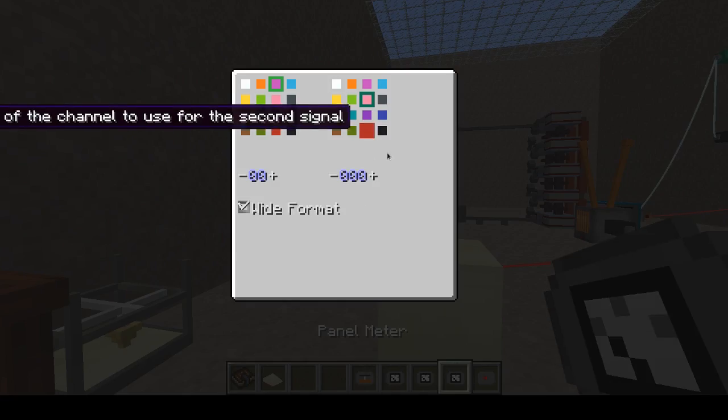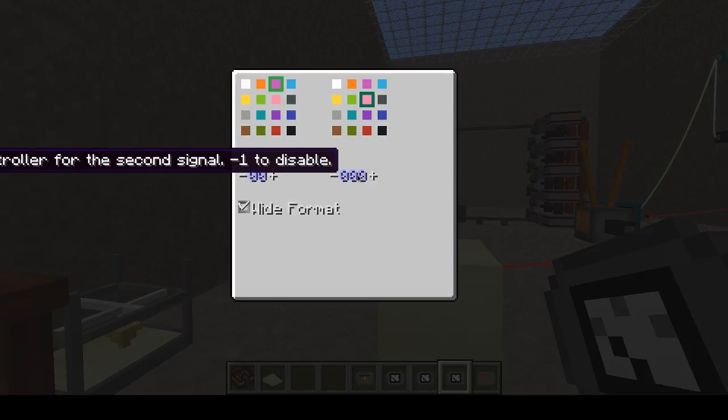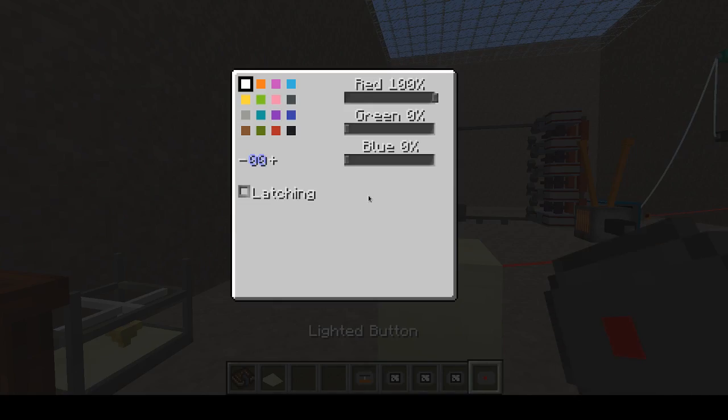The second channel here is set for fine control. The first channel has 15 settings, we need more than that, so the second channel can be used to set the voltage in between the settings of the first channel, and the firing button is on the light blue channel.